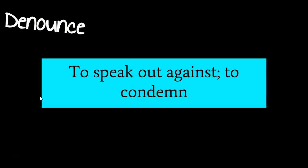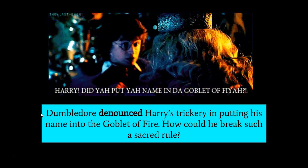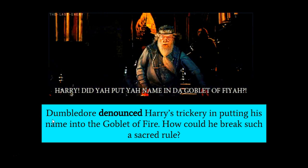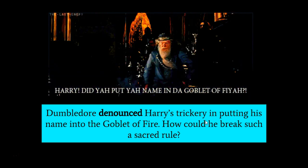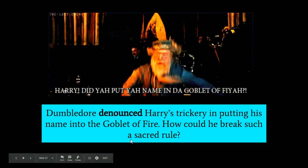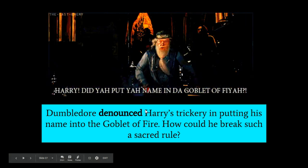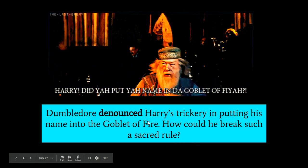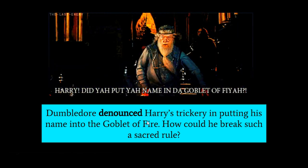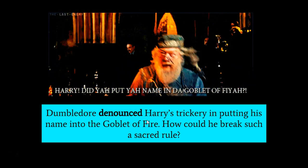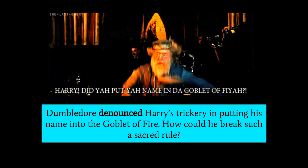For our next word, we have denounce — to speak out against, to condemn. This is a verb: denounce, denounced, denouncing, and other tenses. In the sentence: Dumbledore denounced Harry's trickery in putting his name into the goblet of fire — how could he break such a sacred rule? Here we see that denounce is to show displeasure over some type of action. Again, this word can be positive or negative depending upon what's being denounced.